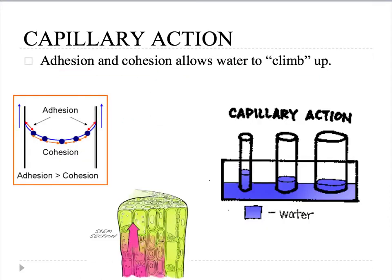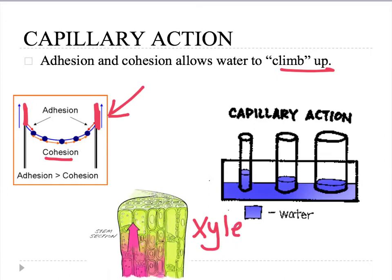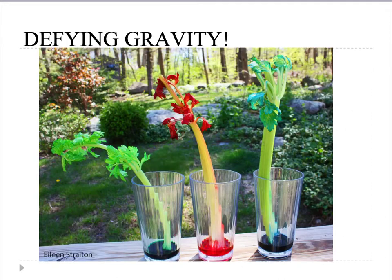Capillary action is due to adhesion and cohesion forces and it allows water to climb up. Adhesion is the water adhering to the side of the tube, and cohesion is water molecules attaching to one another. This is important because it is how water gets up to the top of a tree through the xylem — tiny tubes inside the tissue of a plant. An experiment you can do is put colored water in celery and see how the plant absorbs it, which is capillary action.